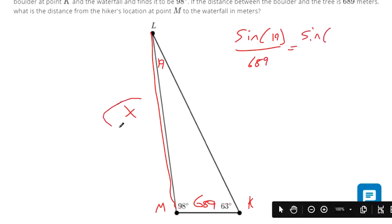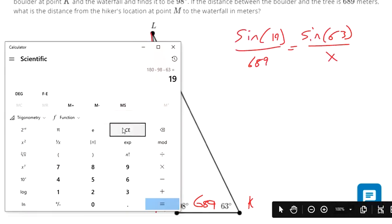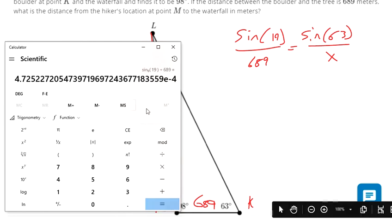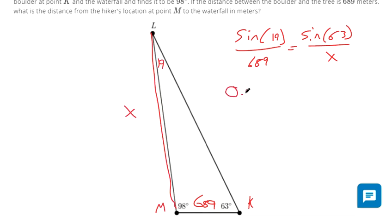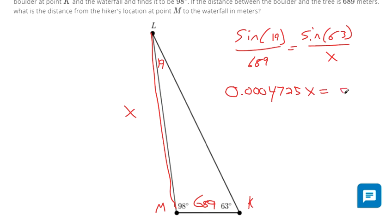We're going to do sine of 63 divided by x. I'm choosing 63 because x is the corresponding side there. So let's do sine of 19 divided by 689 in our calculators. And there's that scientific notation again, 0.0004725 because that means move the decimal four places. That's times 10 to the negative fourth. And then I'm also going to multiply x while we're at it to both sides to get it out of the denominator.